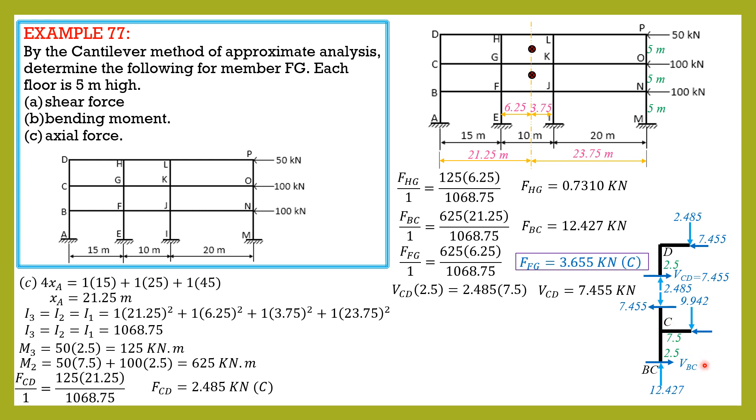Shear in BC summation moment here times 2.5, then plus 2.485 times 7.5, equals plus 7.455 times 2.5 equals 12.427 times 7.5. So shear in BC is equal to 22.371 kilonewtons.